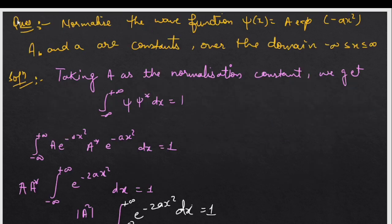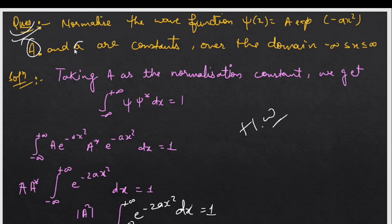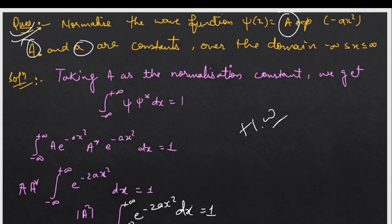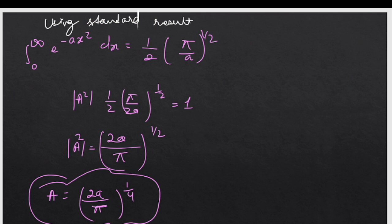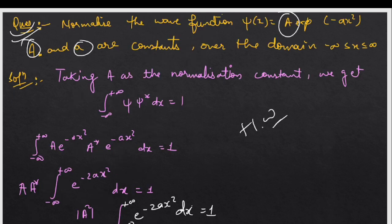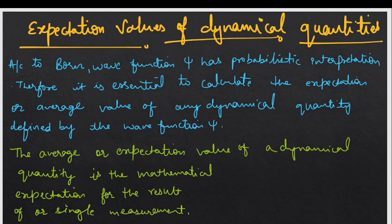I hope you understand this question. If you don't, comment below because we are doing daily questions. Here is your next homework question: normalize this wave function where both A and small a are constants. Take all conditions and try this one. Tomorrow we will look at the solution, then move on to expectation values of dynamical functions and learn about experiments. Thanks for watching, bye.